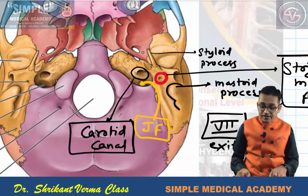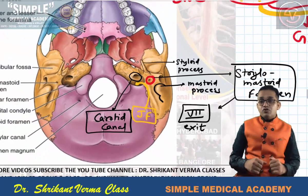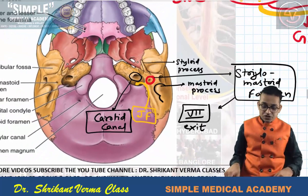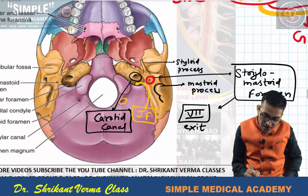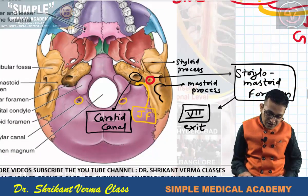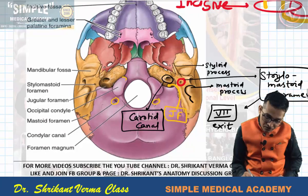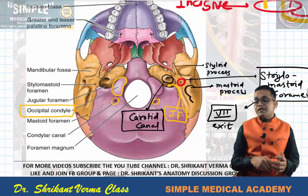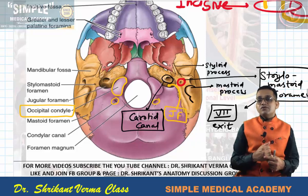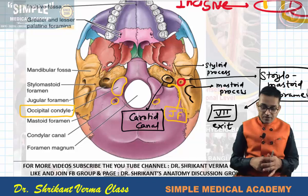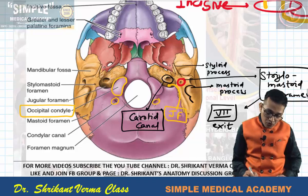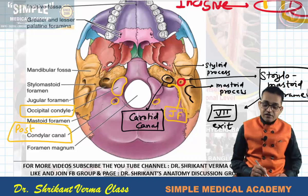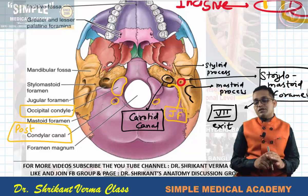There are various important foramina at the lower side. There is another foramen on the posterior side of the condyle — this structure indicates the occipital condyle. In front of the occipital condyle there is the intercondylar canal, which passes the 12th cranial nerve. The posterior opening is known as the posterior condylar canal — not important, just for information.